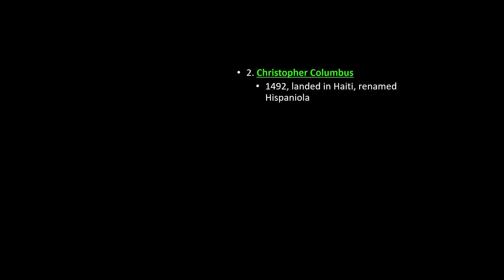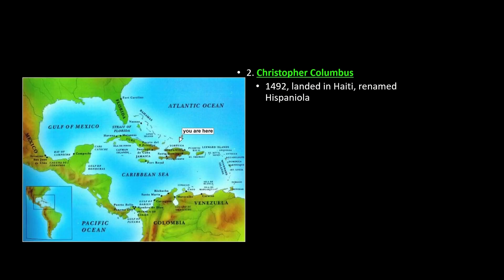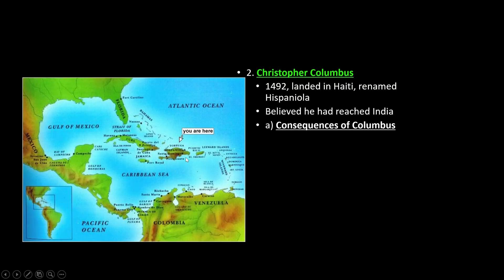Columbus set off. Two months into the voyage, they hadn't found land and his crew threatened to mutiny — they said if they didn't find land tomorrow, they would kill him and go back to Europe. Luckily, that was the day they spotted land and landed in Haiti. Because Columbus had no idea of the existence of North, Central, or South America, he believed he'd landed in the Indies — in Asia, in India. That's where he thought he'd landed.